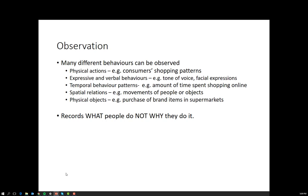Spatial relationships tell us something about people's feeling of crowdedness and people's desire to be around others versus avoidance of others — there's a difference between people thinking a restaurant is popular because it's crowded versus uncomfortable because it's crowded. And physical objects: purchase of brands in supermarkets — what do we look at versus what do we pick off the shelf versus what do we buy? Observation can record what people do but not why they are doing it, so it is limited in the kind of research question it can answer.